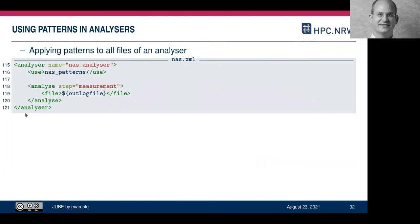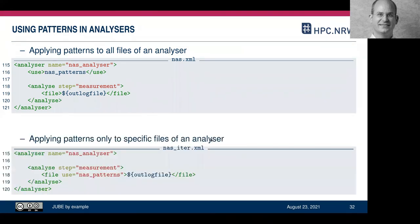The analyzer is straightforward once you have pattern sets configured. You specify which pattern set to use, the step to analyze ('measurement'), and the file containing the output (e.g., 'job.out', the default from platform.xml). JUBE applies the patterns to that file in each measurement sandbox. You can also map specific pattern sets to specific output files if you have multiple output files with different patterns.